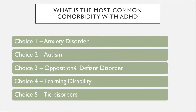For tonight's polls, we're going to try to keep this interactive. As a teacher at Siena for their nursing department, I like to engage people. We're going to use the polling option in the chat. The first question: what are the most common comorbidities with ADHD, and which has the highest percentage? The choices are: one, anxiety disorder; two, autism; three, oppositional defiant disorder; four, learning disability; or five, tic disorders. Look in your chat for the polling option and choose one.